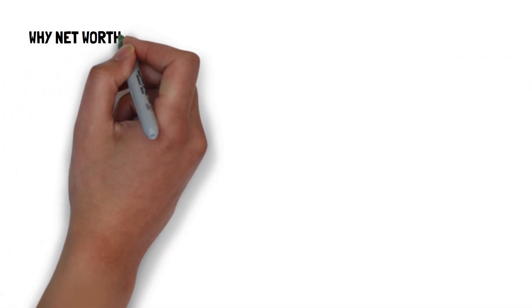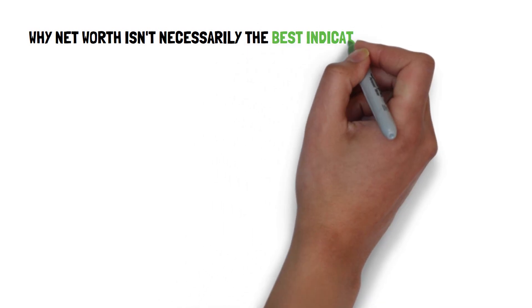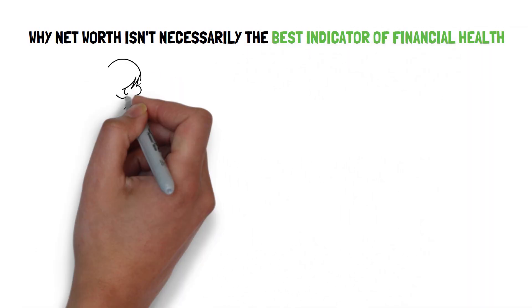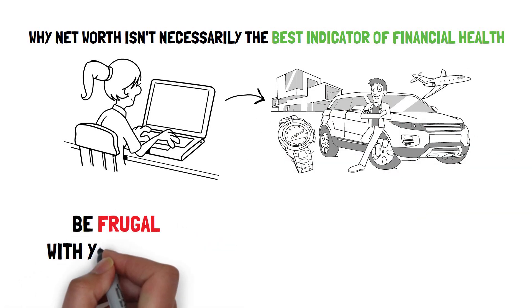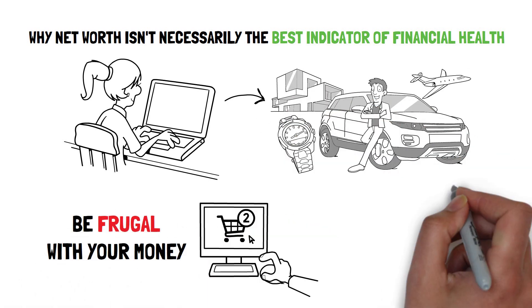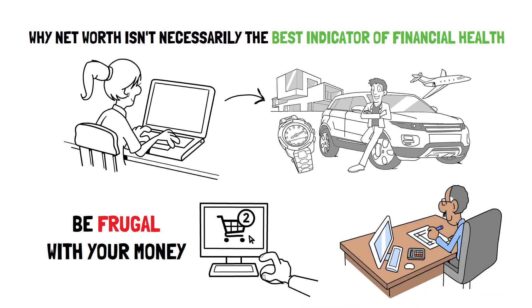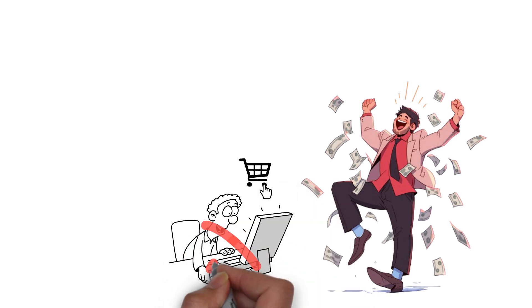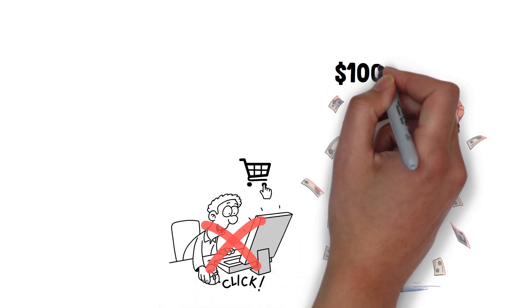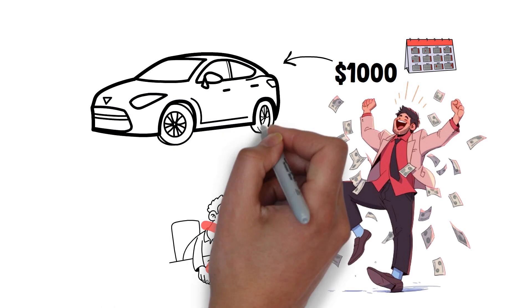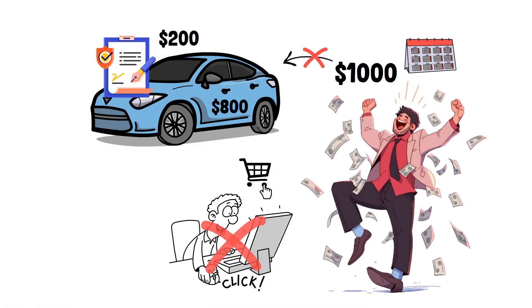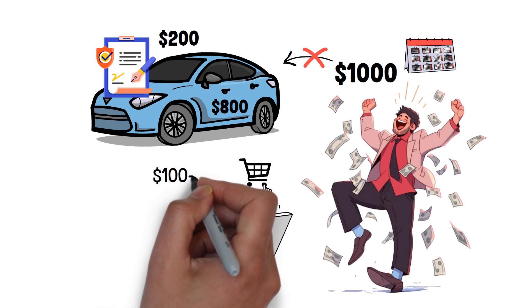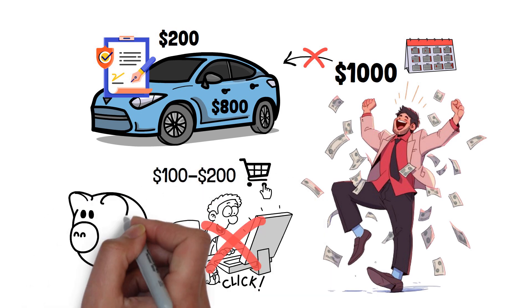Before we go into why net worth isn't necessarily the best indicator of financial health, let's look at some things you can do to improve your financial situation. To begin, be frugal with your money and just buy what you can afford. It is critical to live within your means. When you get a raise or an increase in your income, don't go out and spend every last penny of it. If you get a $1,000 pay boost every month, don't finance a new car with an $800 payment and a $200 insurance increase. Instead, try spending $100 or $200 of the extra money and keeping the rest.